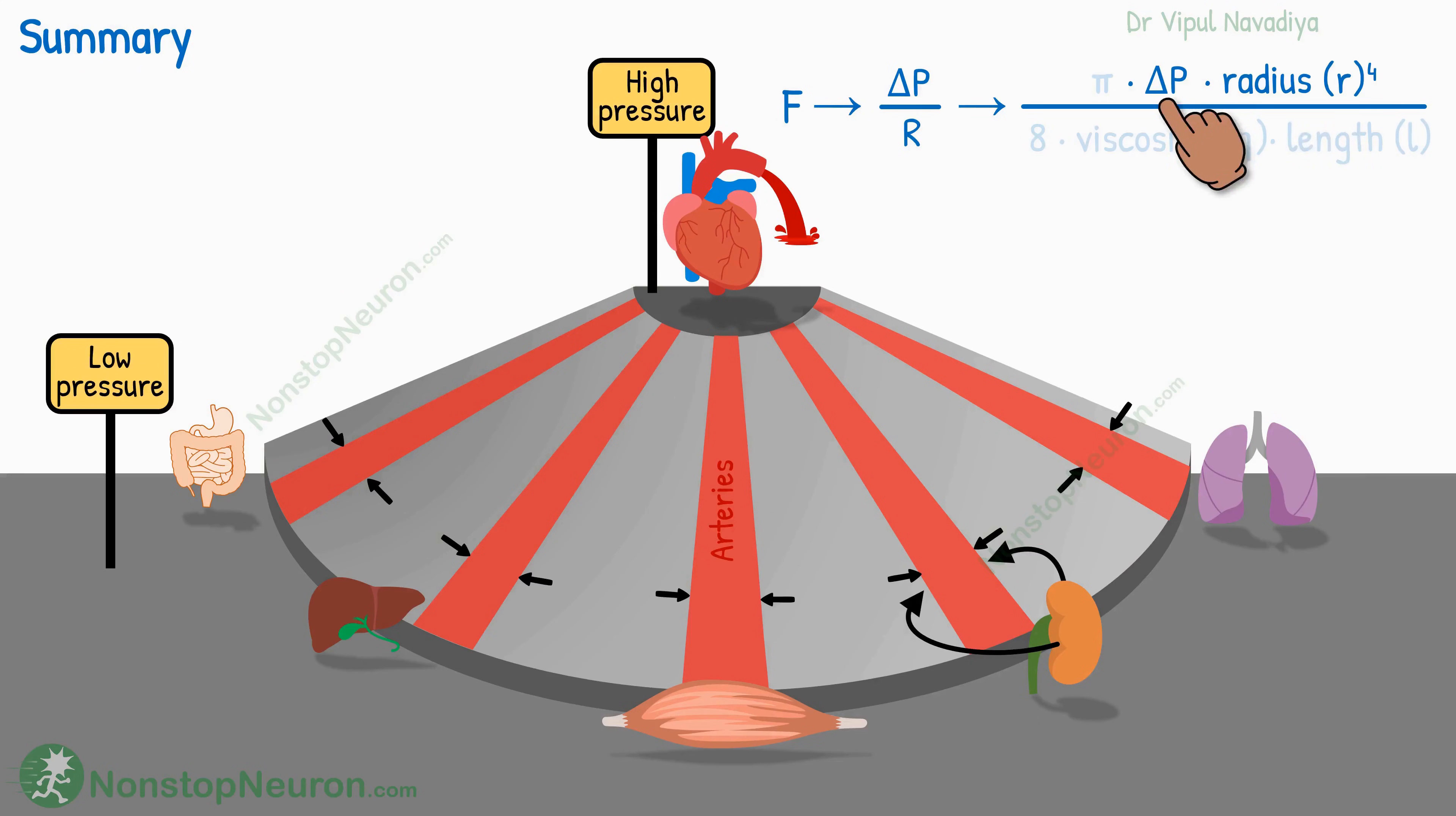Among these parameters, blood pressure and the radius of vessels are used by our body's control systems to regulate blood flow to various organs. For the regulation of pressure, the pumping activity of the heart is controlled. This tends to affect blood flow to all the organs.